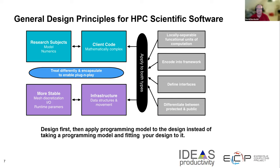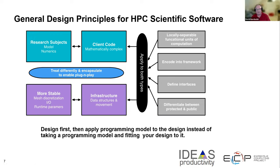This leads to a picture that might look like this. In the teal area up top, we have the physical model, which is the primary subject of your research activities — the client of the code. This is the stuff that's changing most frequently; you can plug it in and plug it out and do different models. That's supported by the code in purple, which is more stable and provides the infrastructure: dealing with data structures, data movement, runtime parameters, meshing, and things like that. This is the separation I talked about on the previous slide.